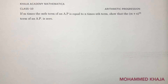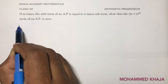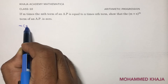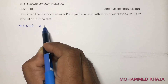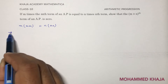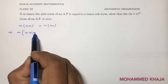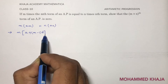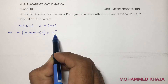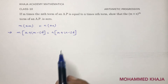If m times the mth term of an AP is equal to n times the nth term, show that the (m+n)th term of the AP is 0. Here, m times the mth term equals n times the nth term. So, m times (a + (m−1)d) equals n times (a + (n−1)d).